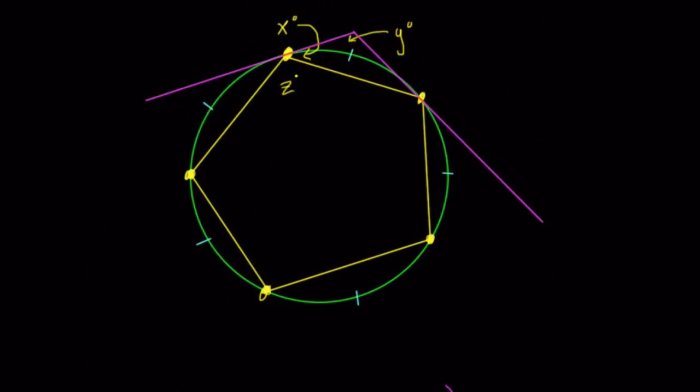Here we have a pentagon inscribed in a circle, and we know it's a regular pentagon. What we see are these dashes, and there are five of them. This tells us that these five sections are all equal, they're congruent in measurement.